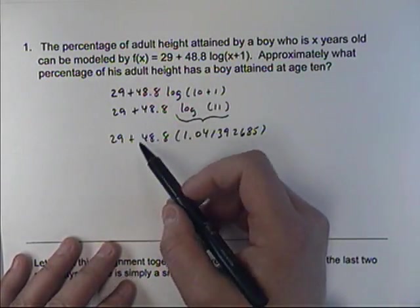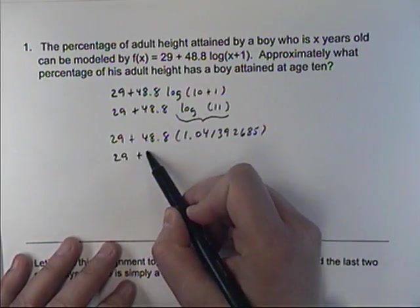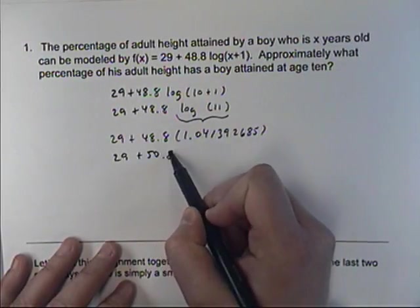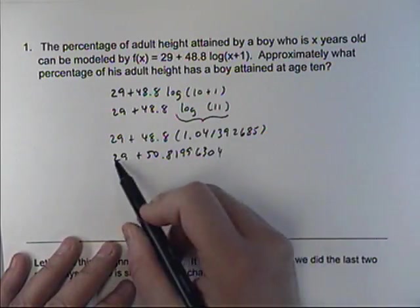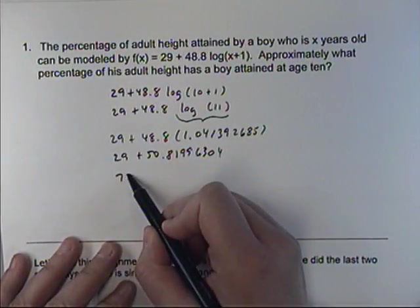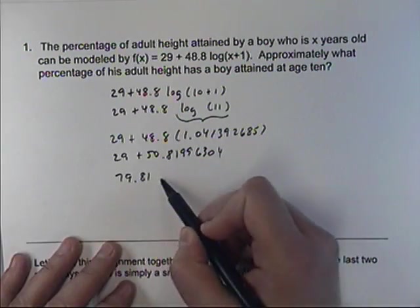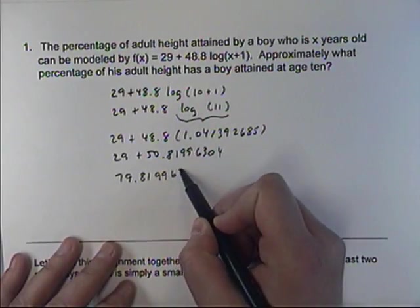And then if we multiply those two numbers together, we get 50.81996304. And then finally we add 29 to that. So, 79.81996304.